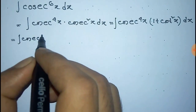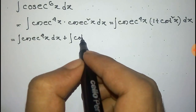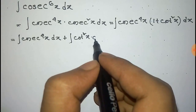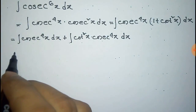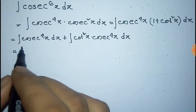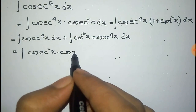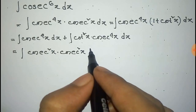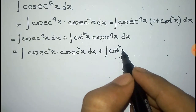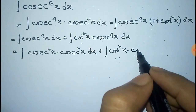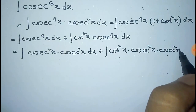After expanding, this equals the integration of cosec to the power 4x dx plus the integration of cot square x into cosec to the power 4x. This cosec to the power 4x can be written as the product of cosec square x and cosec square x dx, and similarly for the cot square x term.